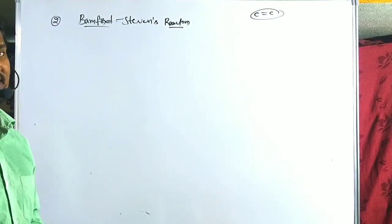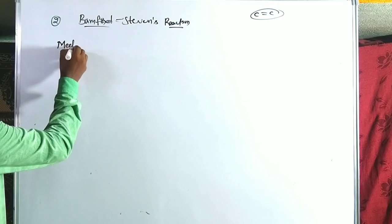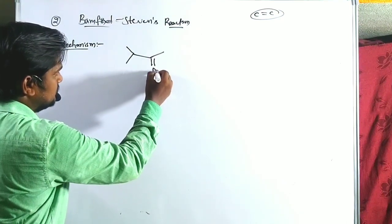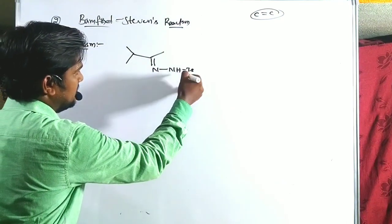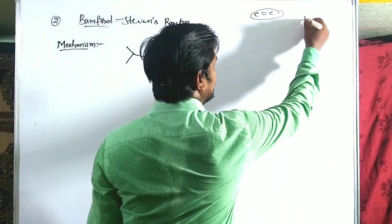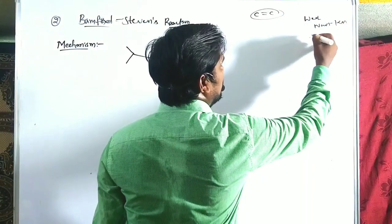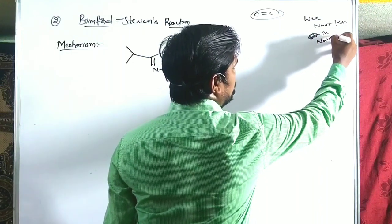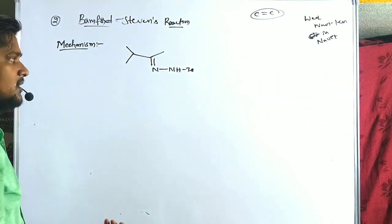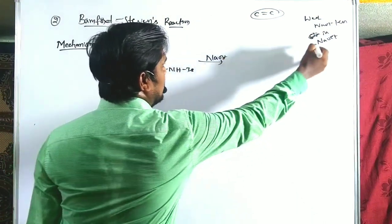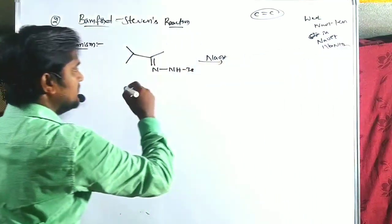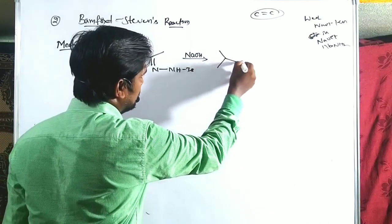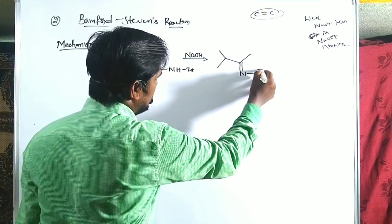Now the mechanism: the starting material is N-NH-Ts (tosyl hydrazone). Weak bases such as NaOH, KOH, sodium ethoxide, or sodium amide are used. These bases abstract the proton to give the N-anion, N⁻-Ts.